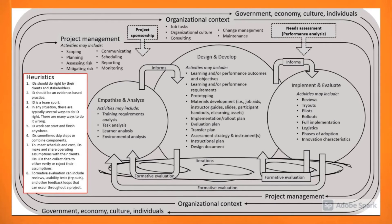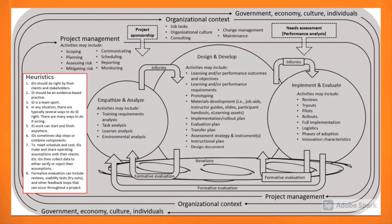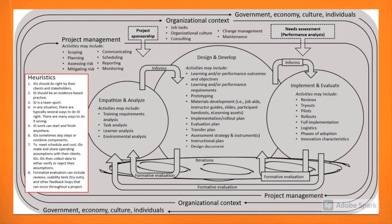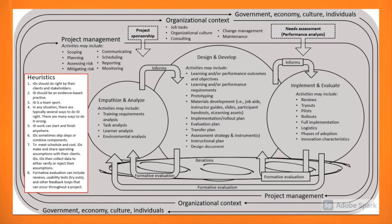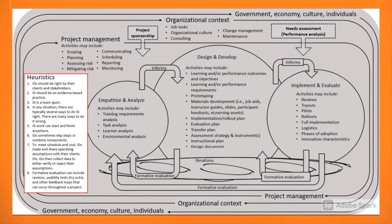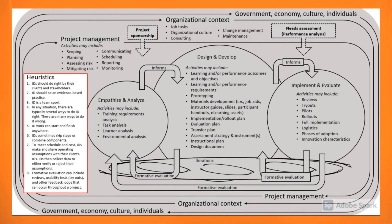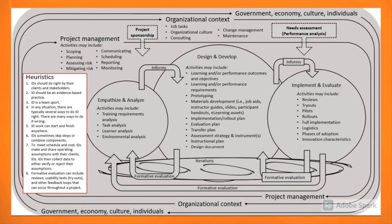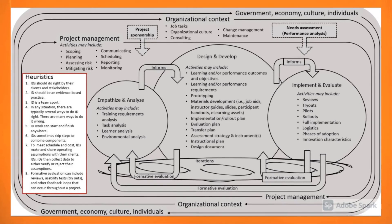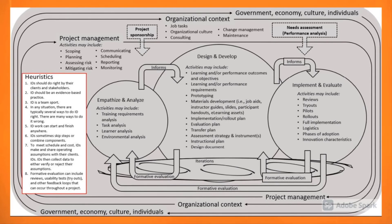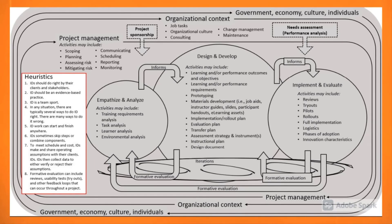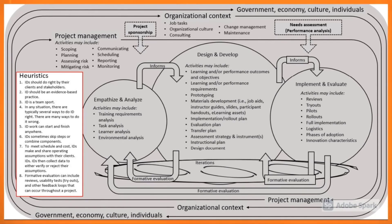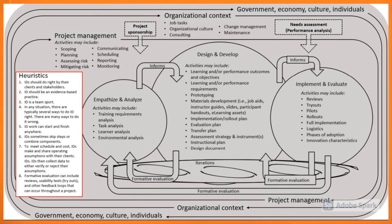The heuristics include: 1. IDs should do right by their clients and stakeholders. 2. ID should be an evidence-based practice. 3. ID is a team sport. 4. In any situation there are typically several ways to do ID right, and so there are many ways to do it wrong. 5. ID work can start and finish anywhere. 6. IDs sometimes skip steps or combine components. 7. To meet schedule and cost, IDs make and share operating assumptions with clients, then collect data to verify or reject those assumptions. 8. Formative evaluation can include reviews, usability tests or tryouts, and other feedback loops throughout a project.